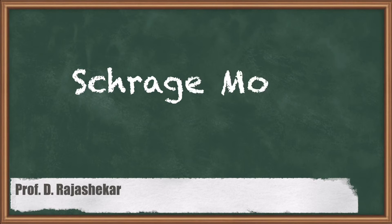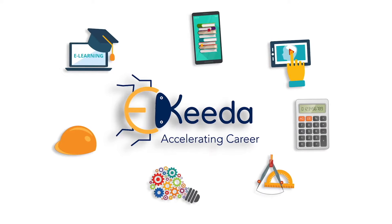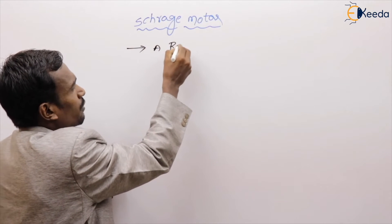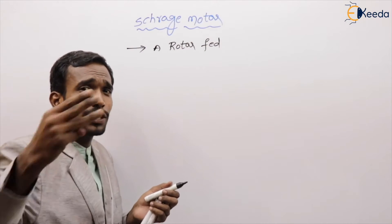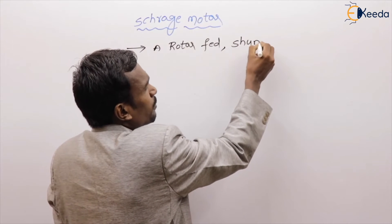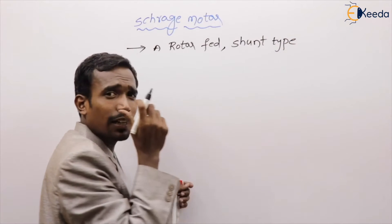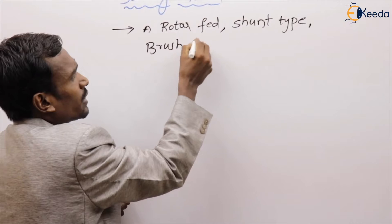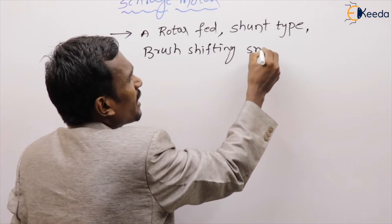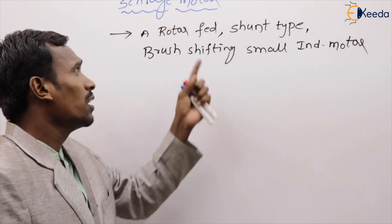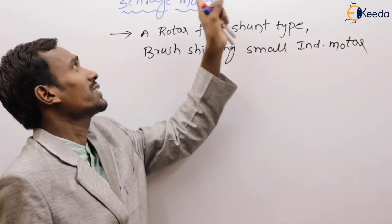Hi friends, in this video we are going to discuss about the Schrage Motor. The Schrage Motor is nothing but a rotor-fed, shunt-type, brush-shifting, small induction motor. The supply is given to the rotor, not the stator. It is a shunt type because the winding is in parallel. This small induction motor is called the Schrage Motor.